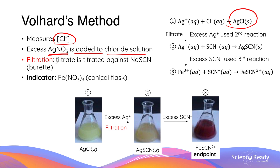When all chloride ions are reacted, filtration is performed to filter the precipitates, and the filtrate is titrated against sodium thiocyanate, which is placed in the burette. Some amount of iron(III) nitrate solution is also added to the conical flask as the indicator of this titration. When thiocyanate ions are added to excess silver ions from the previous reaction, they produce a white precipitate, silver thiocyanate.